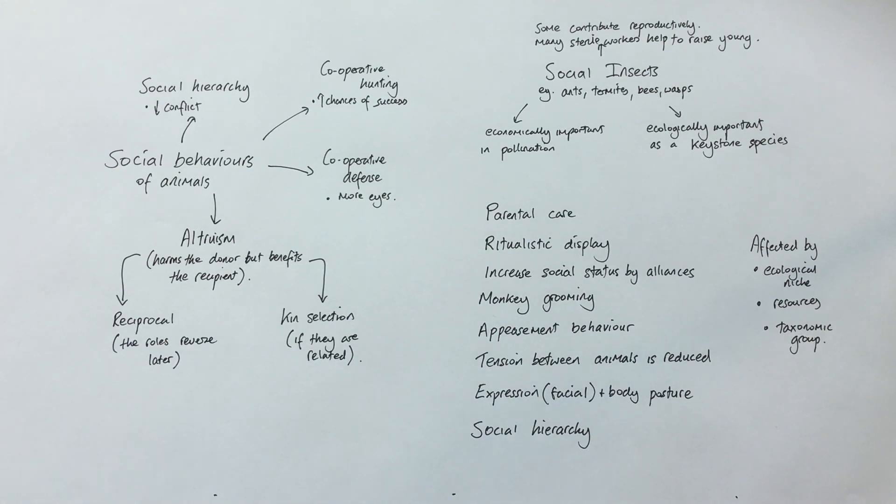The last thing I've just pointed out is that there are three main things that will affect how primates behave with each other and in their groups. That is the particular ecological niche that they're in, the availability of resources that there are, and the particular taxonomic groups. So the particular type of primate that you're thinking about, whether that's gorillas, orangutans, humans, that will have a significant effect on how they behave.